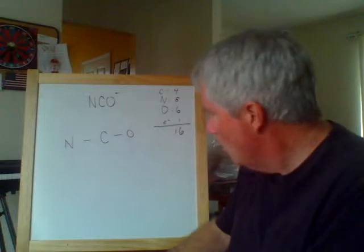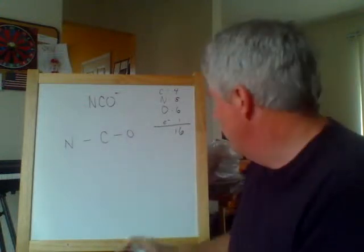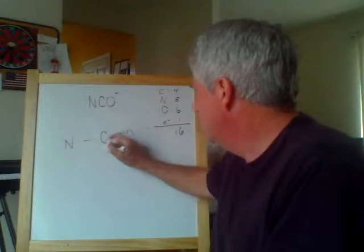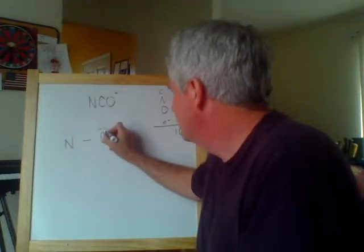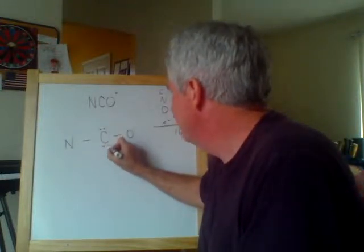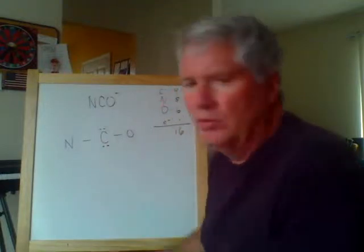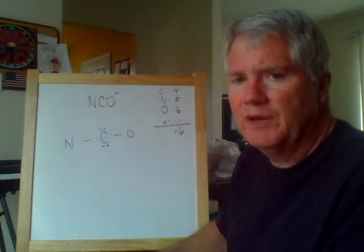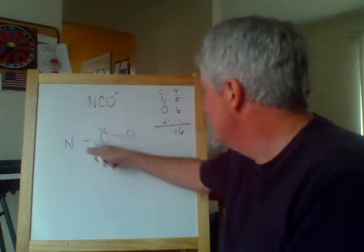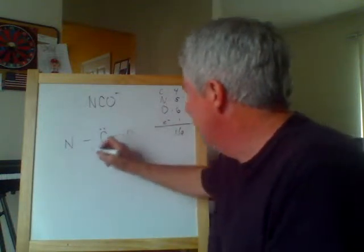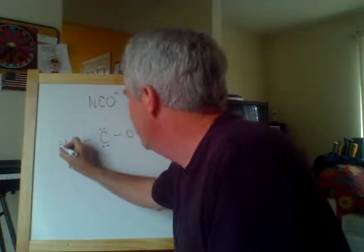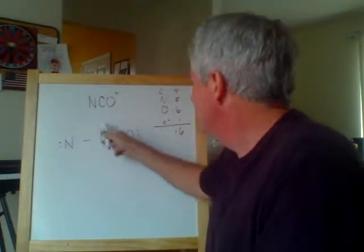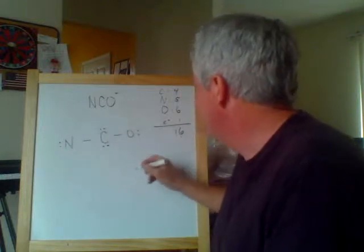We've already taken care of four of them. Let's focus on carbon and say carbon should get a couple of pairs — we know they're not going to end up there because carbon almost never ends up with lone pairs, but we'll put them there to start. That's two, four, six, eight. We've got eight more to go. Let's put a pair on nitrogen and a pair on oxygen — that's two, four, six, eight, ten, twelve. We have four to go, so let's put two there and two there.